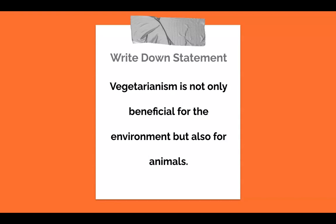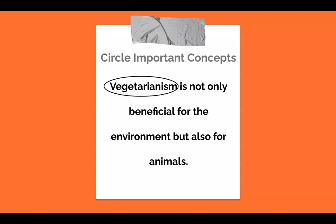We can start by writing that down. Now, let's circle any important concepts. I'll start by circling vegetarianism because that seems important to me. Next, I'll look at 'beneficial.' Since this indicates a positive aspect and I want to find articles discussing all aspects of research, for right now I'll hold off on that. Next, I'll include environment and animals because these are concepts that relate directly to vegetarianism and what I'll be looking at in my paper.